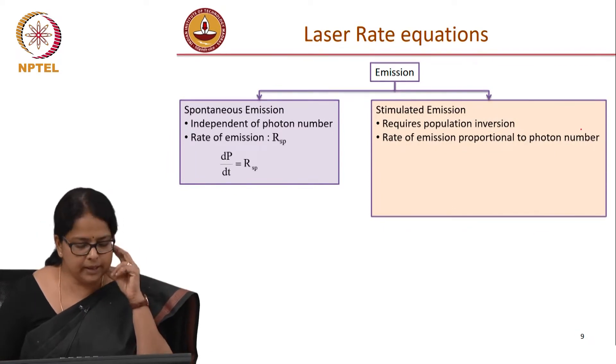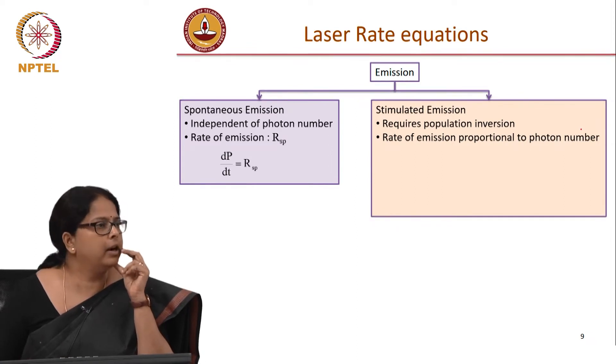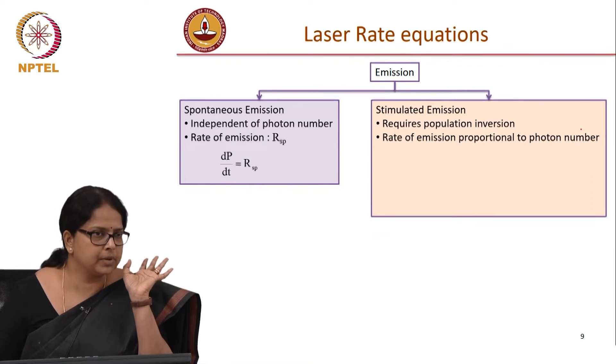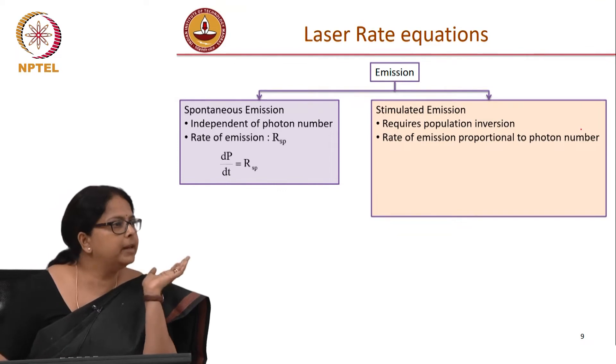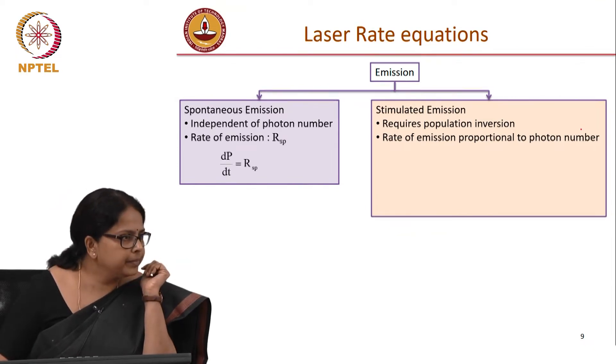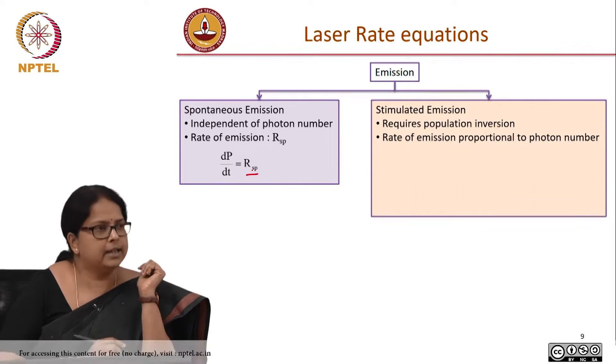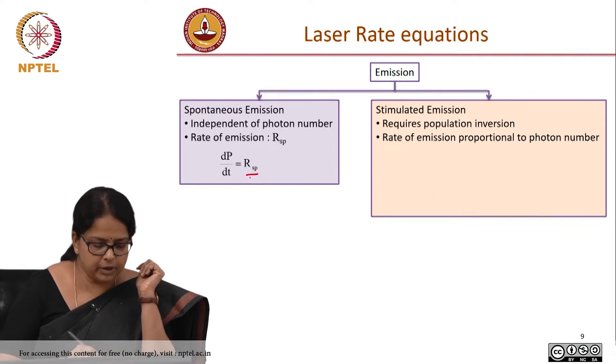Now, in spontaneous emission, we know that is independent of photon number. There are no photons involved in the process. So the rate of spontaneous emission should be independent of photon number. So that rate of spontaneous emission is RSP, let me call that as RSP, this number of photons per second.